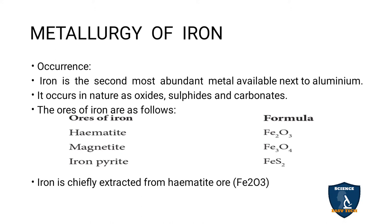Iron is the second most abundant metal, next to Aluminium. It occurs in nature as Oxides, Sulphides, and Carbonates. Some of the ores of Iron are Hematite (Fe₂O₃), Magnetite (Fe₃O₄), and Iron Pyrites (FeS₂). Iron is chiefly extracted from the Hematite ore, Fe₂O₃.